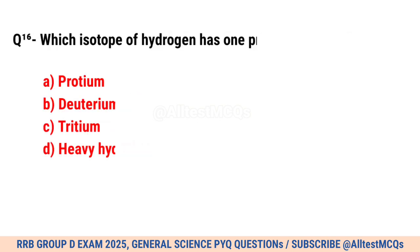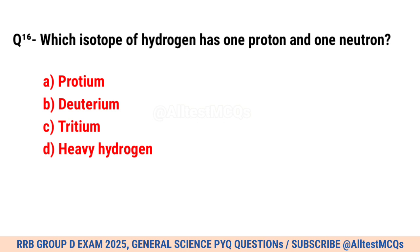Question No. 16. Which isotope of hydrogen has one proton and one neutron? Correct option is B. Deuterium.